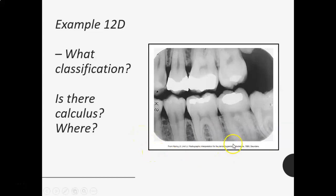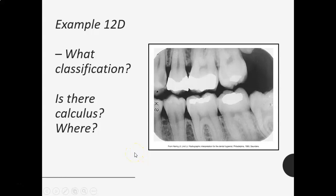Example number 12 distal — here is a really large cavity, clearly all the way through the enamel and quite large, getting very close to the pulp. I would call this a Class 4. Then for calculus — do you see any of those little triangular spurs? There's the calculus, a little spur, and actually another really tiny one right down here on the mesial of tooth 19.